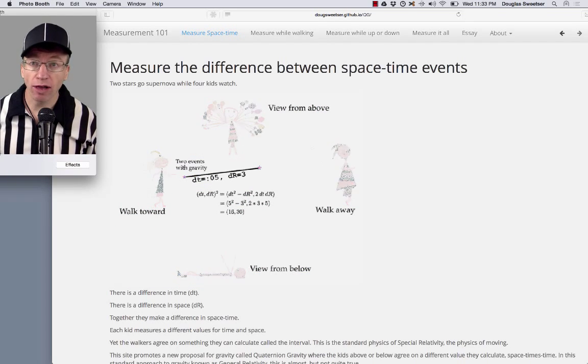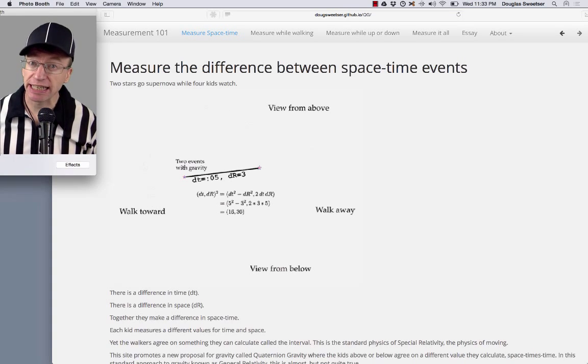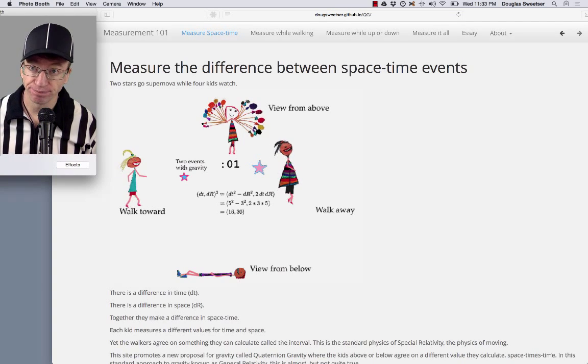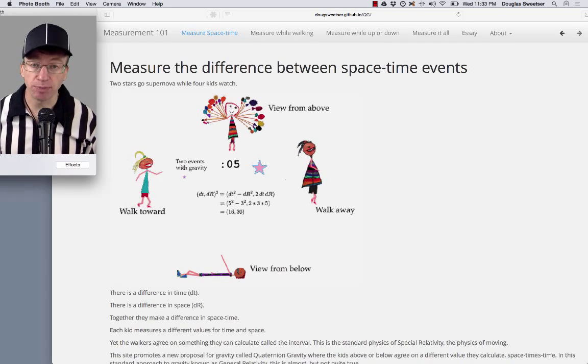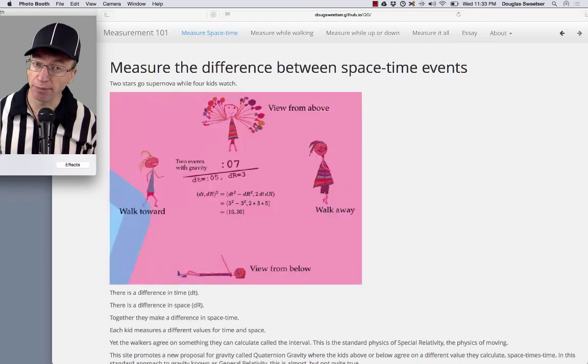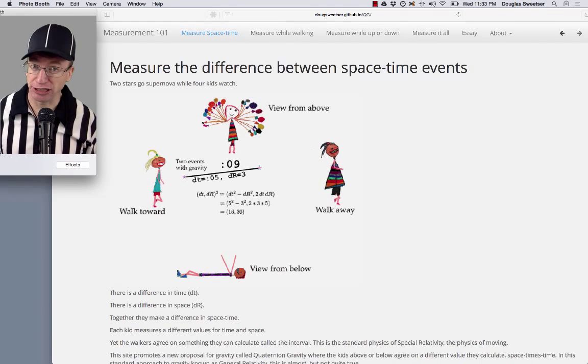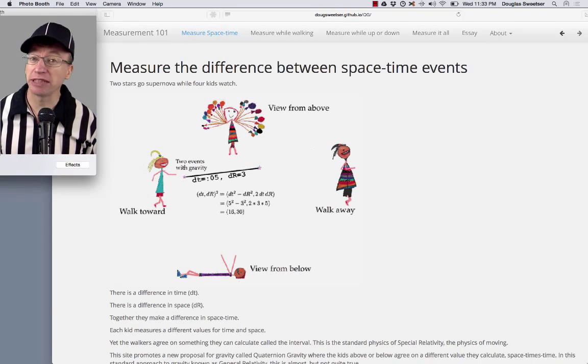This is all about measurements of events in space-time. We were raised on the idea of absolute space and absolute time, not having any relationship to each other. That idea was actually due to Newton.